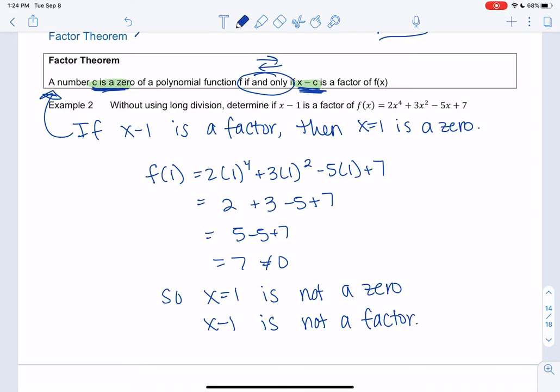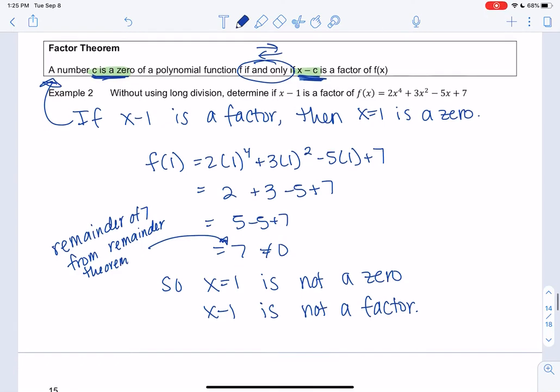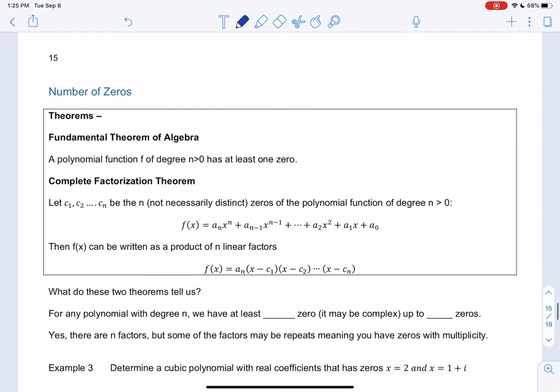And that also goes back to the remainder, right? When we had a remainder of 0, it was a factor because there's no remainder. And so it's a similar idea. So this would have a remainder of 7, if you remember the remainder theorem. If we have a remainder, something is not a factor.